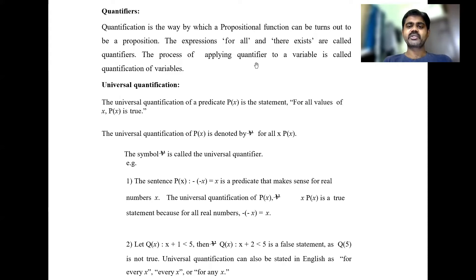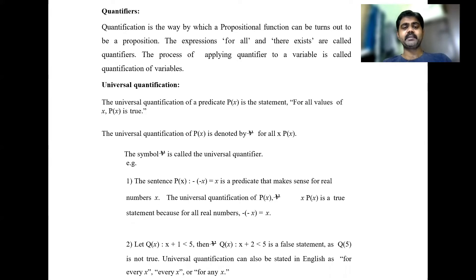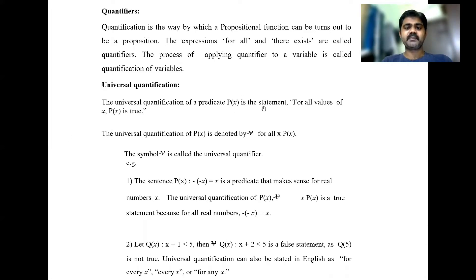The process of applying a quantifier to a variable is called quantification of variables. Universal quantification means 'for all'. The universal quantification of a predicate p(x) is the statement that for all values of x, p(x) is true — meaning whatever the value, p(x) holds true for every value of x.